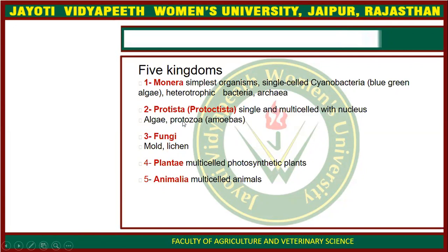In the Protista, single and multicellular organisms are included. In the Fungi, mold, lichens and yeast are included. In the Plantae, multicellular photosynthetic organisms are included, including plants. And in the Animalia, animals are added in the Animalia Kingdom.